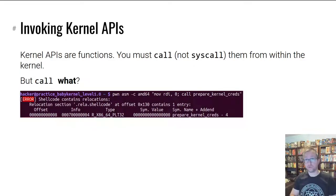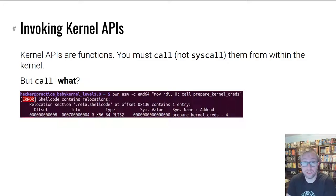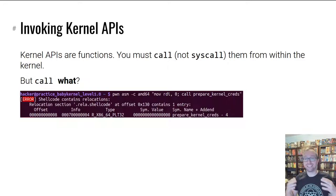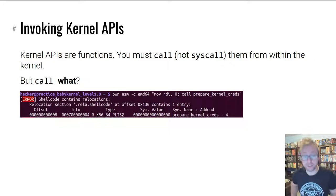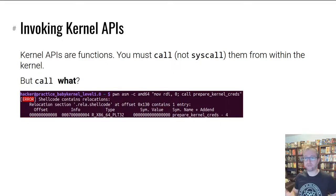Kernel APIs are normal functions. What you do to call a kernel API is trigger the call instruction, not the syscall instruction. But what do you call? If I try to make shellcode with just a simple call to prepare_kernel_cred with an argument of zero, what goes wrong is that GCC, when it compiles and assembles the shellcode, creates an executable with a relocation — meaning it doesn't know where prepare_kernel_cred is. In shellcode, you can't just call a function by its name. When shellcode runs in memory, in the context of ones and zeros, you need to know where a function is to call it.